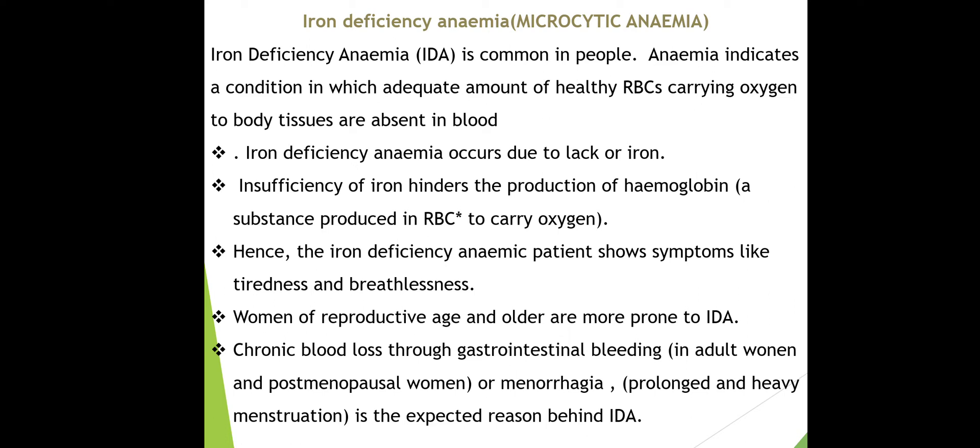Women of reproductive age and older are prone to iron deficiency anemia. They are susceptible due to menstrual bleeding and blood loss. Chronic blood loss can occur, and sometimes GI bleeding is a factor. In adult women and post-menopausal women, menorrhagia is a contributing condition.